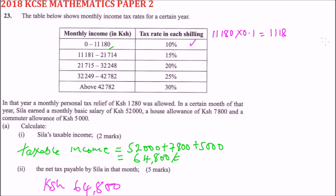Then we calculate the remaining taxable income. We take sixty-four thousand eight hundred and subtract the first bracket amount of eleven thousand one hundred and eighty, which leaves the balance to be taxed in the next bracket.